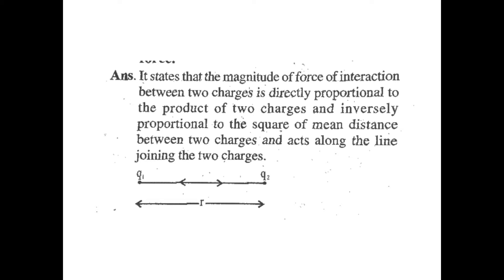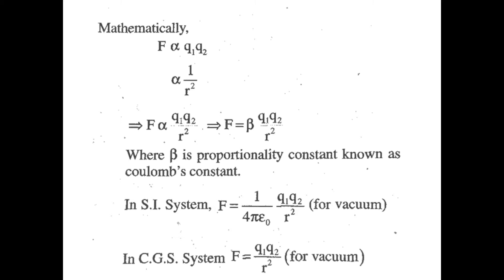Here, two charges q1 and q2 are present, and r is the separation distance between them. Mathematically, F is directly proportional to q1·q2 and inversely proportional to r². This implies F = β·(q1·q2)/r², where β is the proportionality constant known as Coulomb's constant.